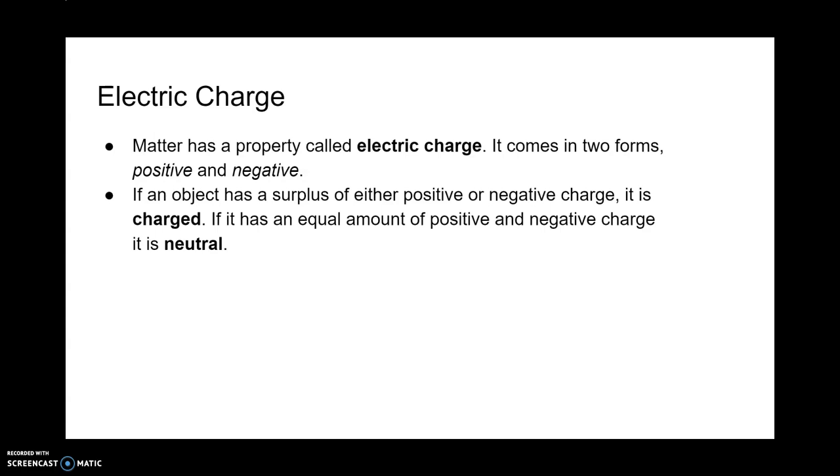If we have an object and it has either a surplus of positive or negative charge, we call it being charged. To be more precise, we have an object that either has a surplus of negative charges or a deficit of negative charges. If there's an equal amount of positive and negative charges on the object, it is neutral.